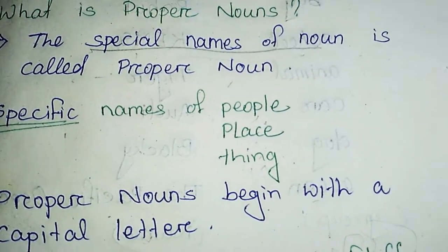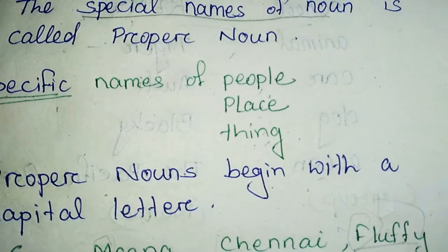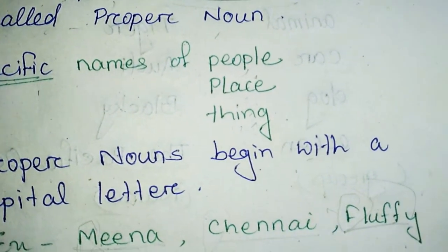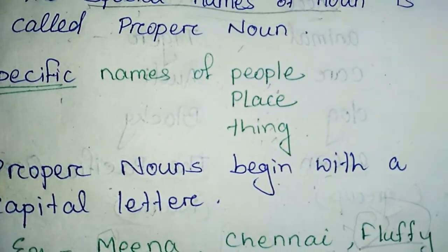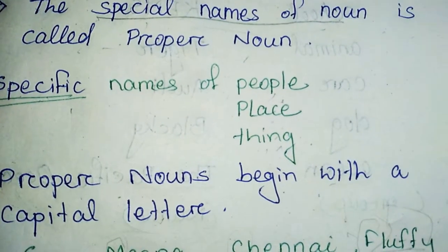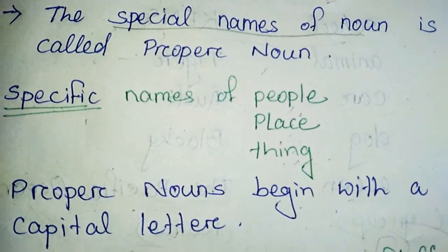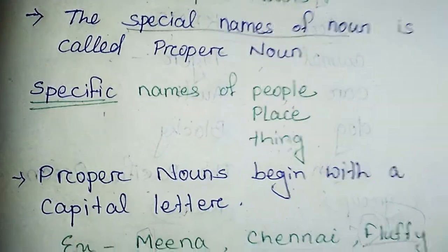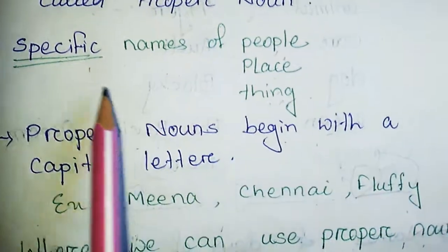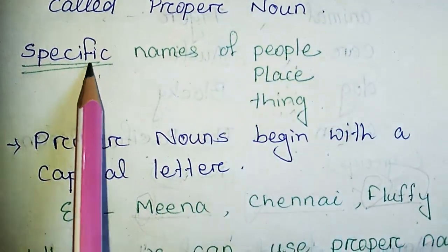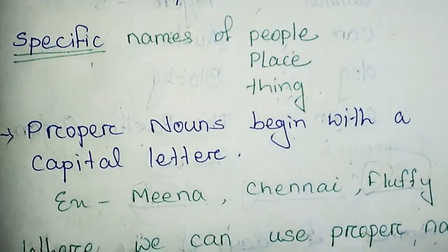Then what are the special names? Special names means the specific names. When we say 'a boy,' it's a common or general name. But when we say 'Rahul,' that is a name of a person, and that is called a specific name or special name. So the specific names of people, the specific names of place, and the specific names of thing — those are called proper noun.